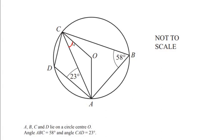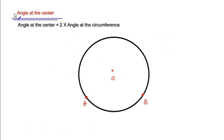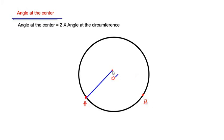To find this angle, let us make use of the angle at the center theorem. The statement of the theorem is: the angle at the center is two times the angle at the circumference of the circle. The two points A and B make an angle with the center of the circle at point O, and the same two points make an angle at the circumference.